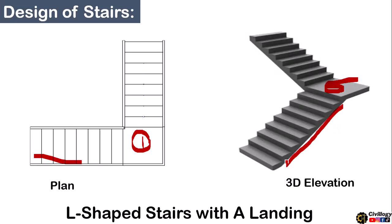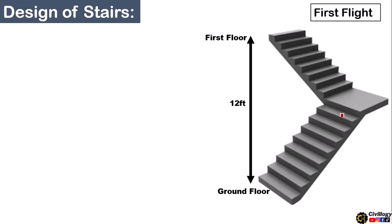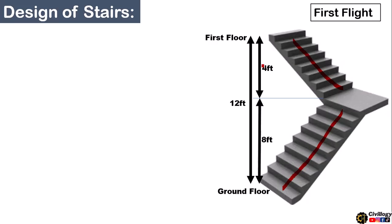Let us suppose this is the ground floor level and this is the first floor level, between which we are going to design a staircase. The height of the floor is 12 feet — it can vary depending on your design. For the first flight, the height is 8 feet, kept at 7 to 8 feet so you can utilize the space below the staircase for a store room, washroom, or bathroom.